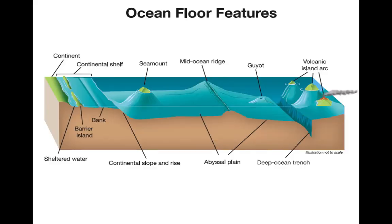To summarize the ocean floor features: the abyssal plain makes up most of it. Where tectonic plates separate, we get mid-ocean ridges. Seamounts are sharp and steep; guyots are flat across the top. Barrier islands and banks are associated features near the continental margins.